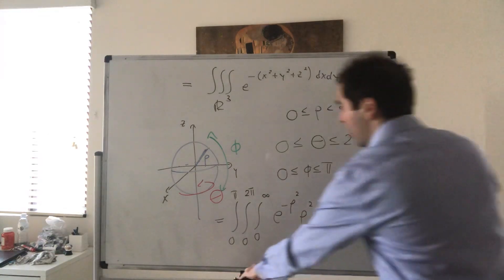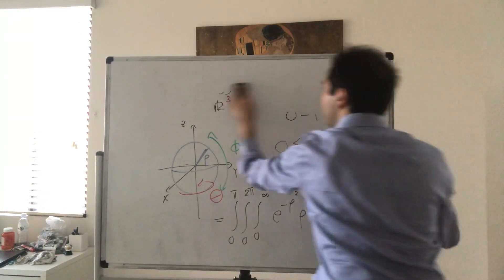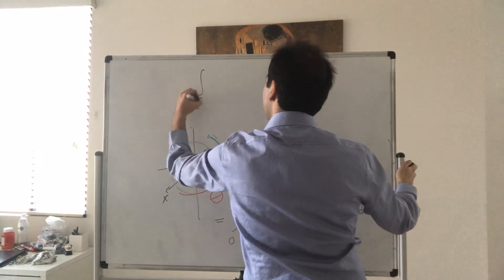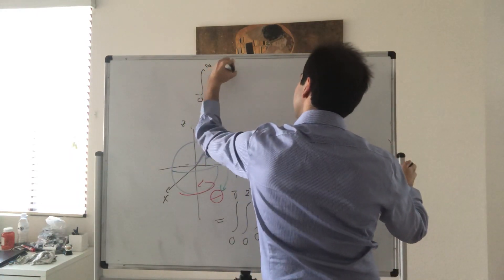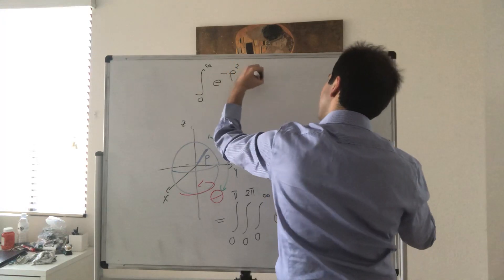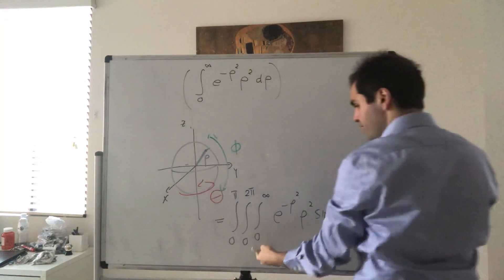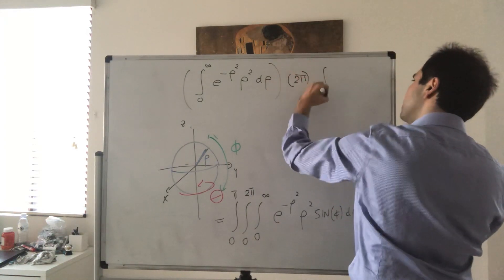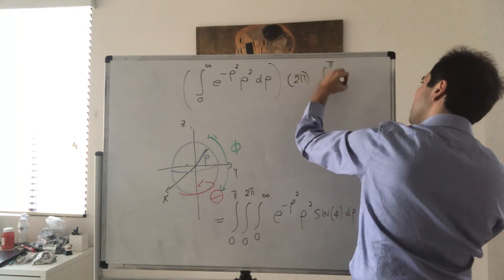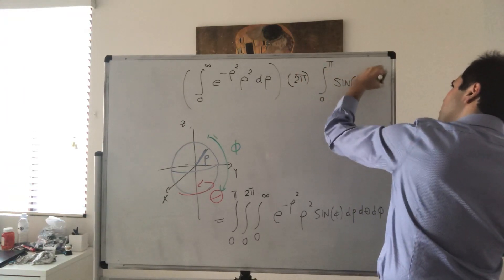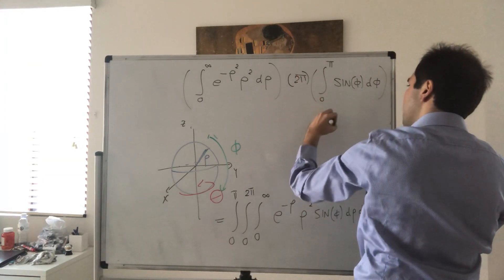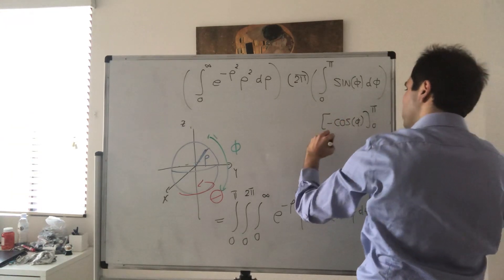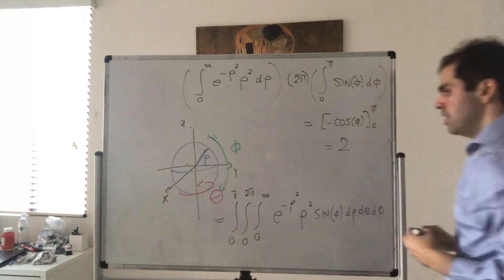But you can just split that up to get the following. On the one hand you have the integral from 0 to infinity of e to the minus rho squared, rho squared, d rho, times—there's no theta here, so it just becomes 2 pi. Last but not least, the integral from 0 to pi of sine of phi d phi. But here an anti-derivative is minus cosine of phi from 0 to pi, so that becomes 2.